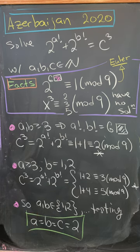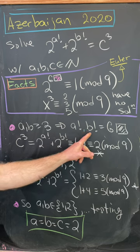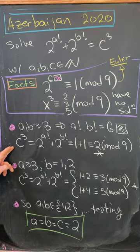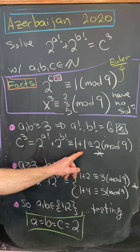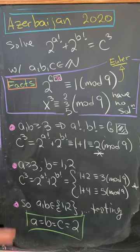Now if a and b are bigger than or equal to three, then a factorial and b factorial are multiples of six, meaning we have c cubed is congruent to one plus one, which is congruent to two mod nine. But that has no solution.